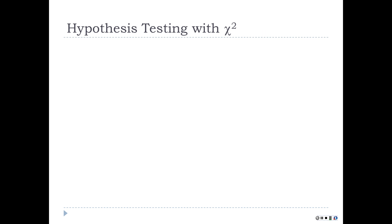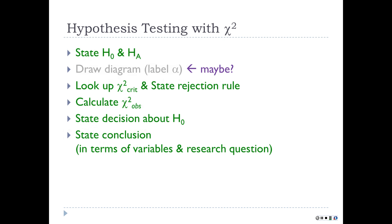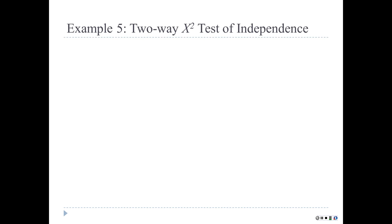When we do hypothesis testing it's the same as before: state the null and alternative hypothesis. You'll look up the chi-square critical value, state your rejection rule, calculate your observed chi-square value, state your decision about the null hypothesis, and then state your conclusion.